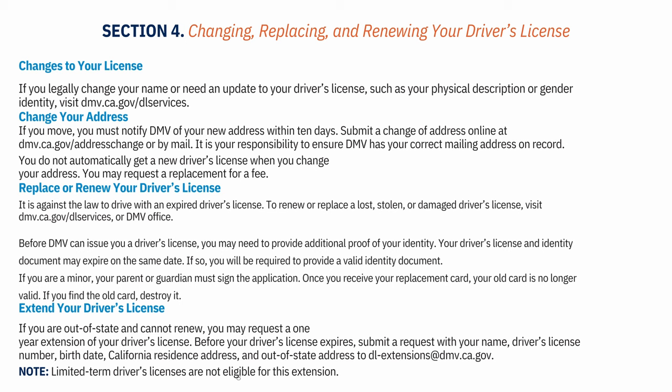Before DMV can issue you a driver's license, you may need to provide additional proof of your identity. Your driver's license and identity document may expire on the same date — if so, you will be required to provide a valid identity document. If you are a minor, your parent or guardian must sign the application. Once you receive your replacement card, your old card is no longer valid — if you find the old card, destroy it.